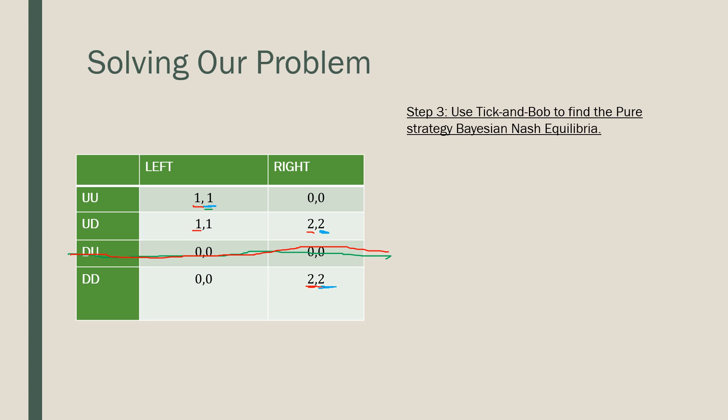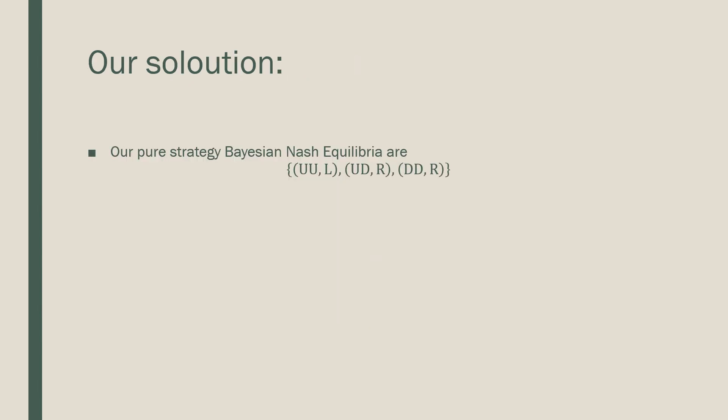So our Bayesian Nash equilibria are UU left, UD and right, and DD and right. And the way we're going to write this is going to be shown on the next slide here. So the way we'd write our pure strategy Bayesian Nash equilibria is as this nice little compact set over here. Compact is obviously not in the mathematical sense, but more just like how it looks nice here. So that's how you solve for a pure strategy Bayesian Nash equilibria. We'll do another example in the next video. Take care.